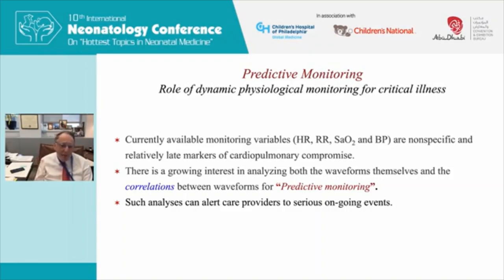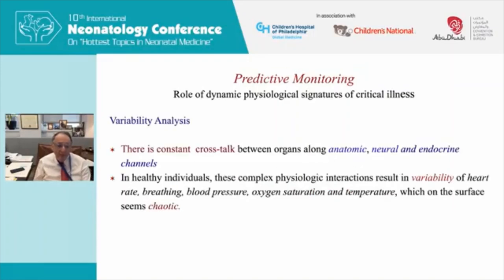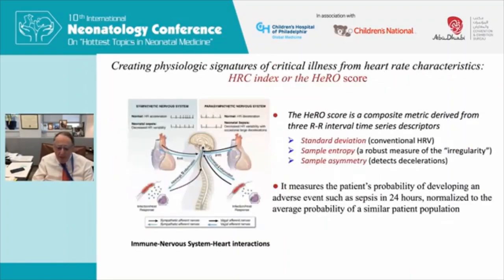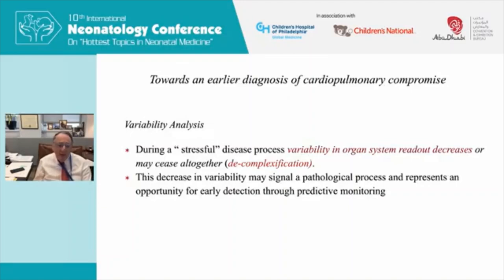Most vital signs we measure in the NICU — heart rate, respiratory rate, saturation, blood pressure — are pretty non-specific; they're late or relatively late markers of cardiopulmonary compromise. But there's a growing interest in using waveforms and correlations between waveforms to predict cytokinemia or predict an adverse event. Organs in the body communicate constantly through anatomic, neural, and endocrine channels. In healthy individuals this results in variability of heart rate, breathing, blood pressure, oxygen saturation, and temperature, with no apparent relationship between those values. In a stressful situation, variability decreases — we call that decomplexification — and this decrease may represent an opportunity for early detection.